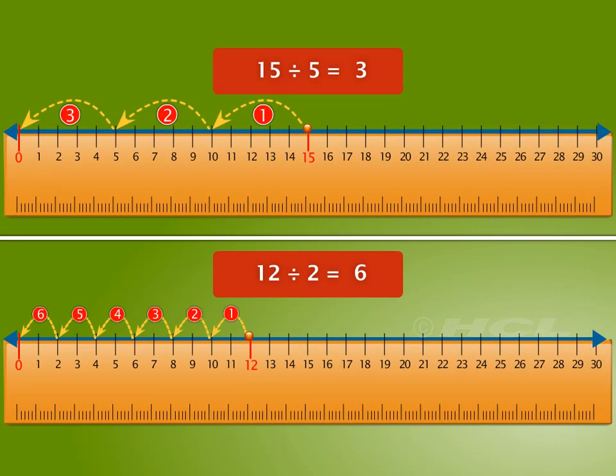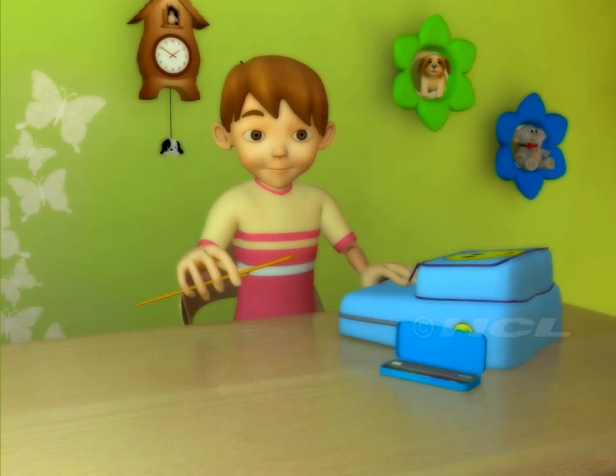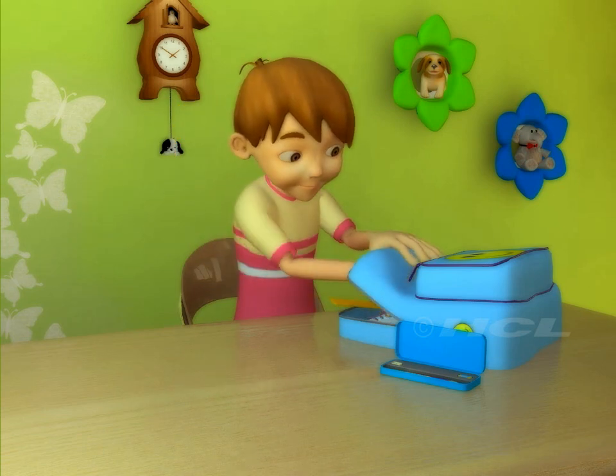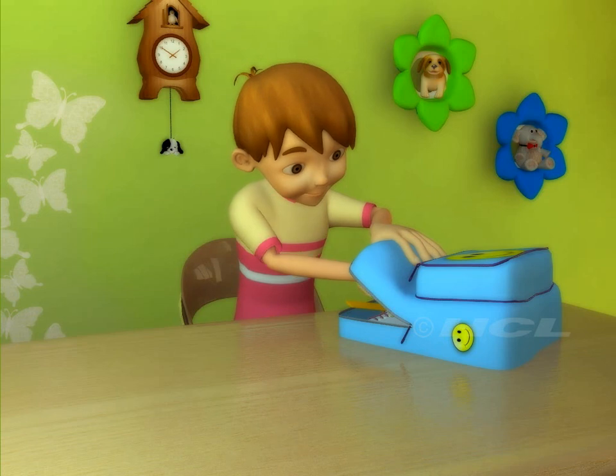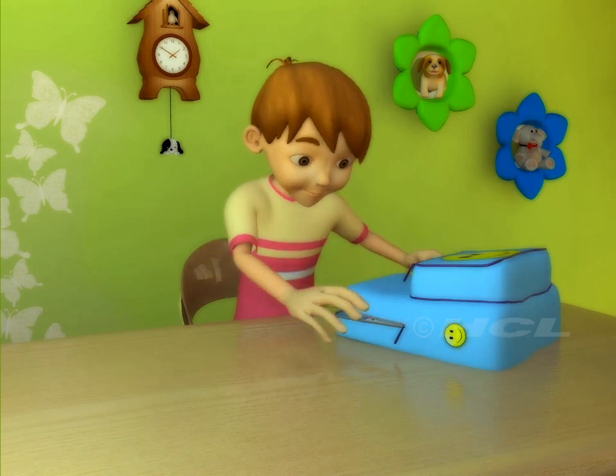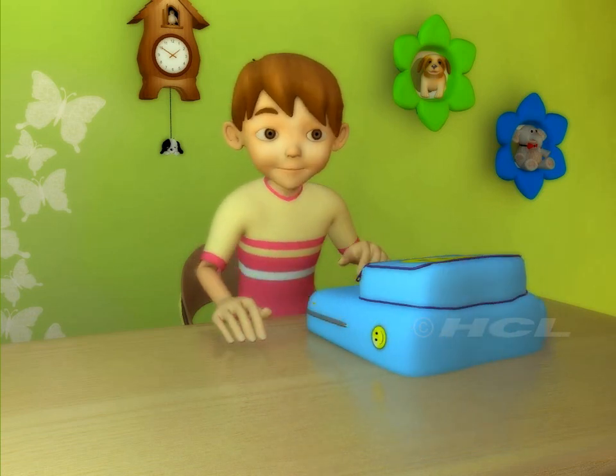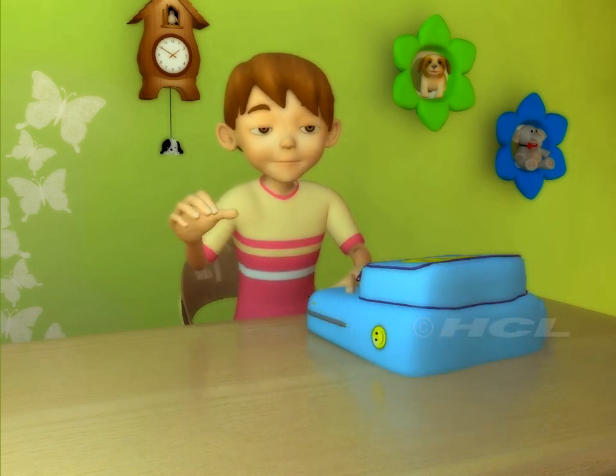As you can see, using a number line is a very easy way to solve simple division problems. Sam has decided to take the ruler to school. Remember, a ruler does more than just helping you draw straight lines. It also has a magic number line that you can use to do maths. See you soon again!